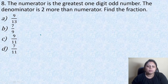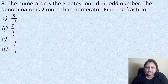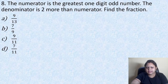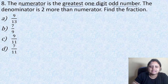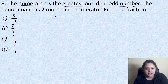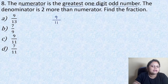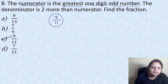Next question: the numerator is the greatest one-digit odd number. The denominator is 2 more than the numerator. Find the fraction. Option A: 9 by 13, B: 7 by 9, C: 9 by 11, D: 7 by 11. The greatest one-digit odd number is 9, so 9 is the numerator. The denominator is 2 more than 9, which is 11. So the required fraction is 9 by 11, which is present in option C.